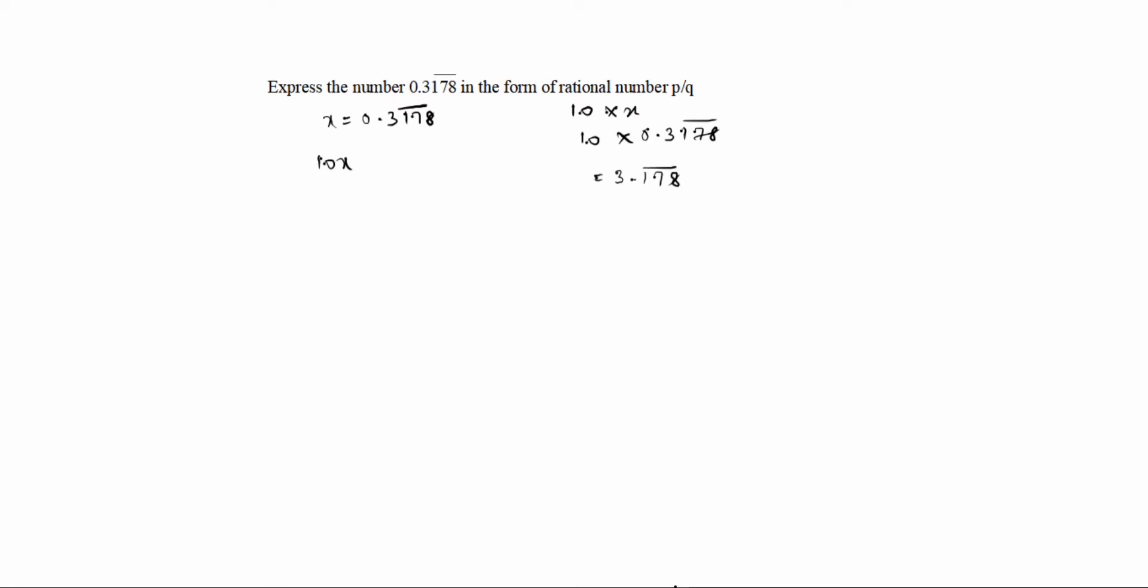You see here the bar is in three digits, so you have to write 178, 178 again. If bar comes in the first place, you have to write 666. If bar is 0.26, the bar is in two places, so what you will do, write 2626.